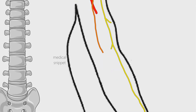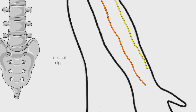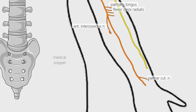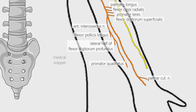In the forearm, the median nerve gives rise to many muscular branches — anterior interosseous nerve and palmar cutaneous nerve. The direct motor branches supply superficial muscles of the anterior compartment of forearm, except flexor carpi ulnaris which is supplied by ulnar nerve. So the direct muscular branches of median nerve supply palmaris longus, flexor carpi ulnaris, pronator teres, and flexor digitorum superficialis. The anterior interosseous branch supplies the deep muscles of the anterior compartment of forearm — namely flexor pollicis longus, pronator quadratus, and lateral half of flexor digitorum profundus. The medial half of flexor digitorum profundus is supplied by ulnar nerve.